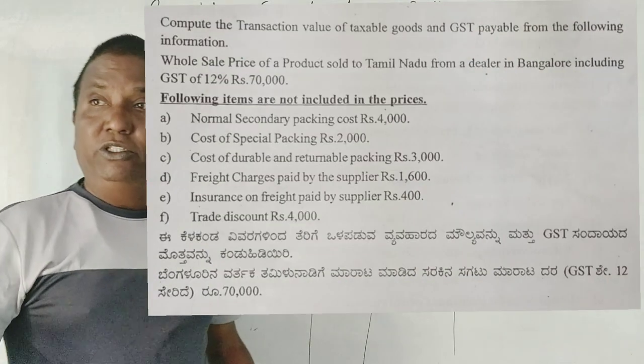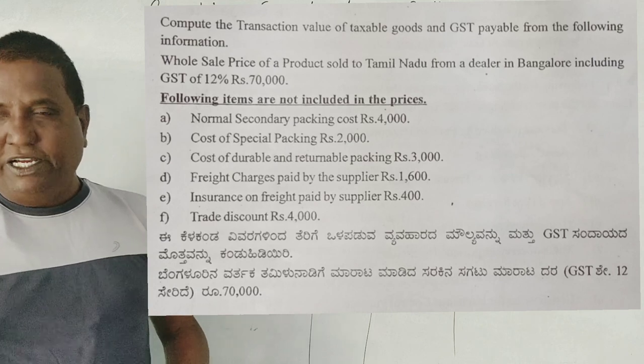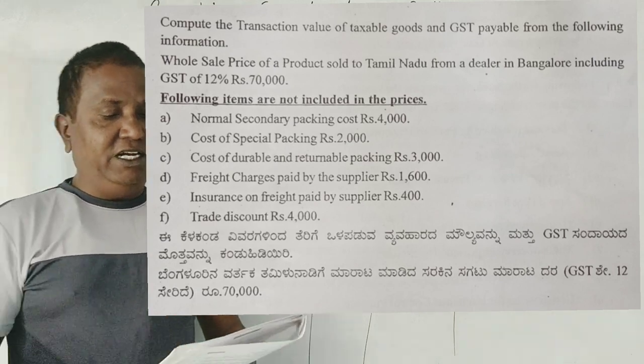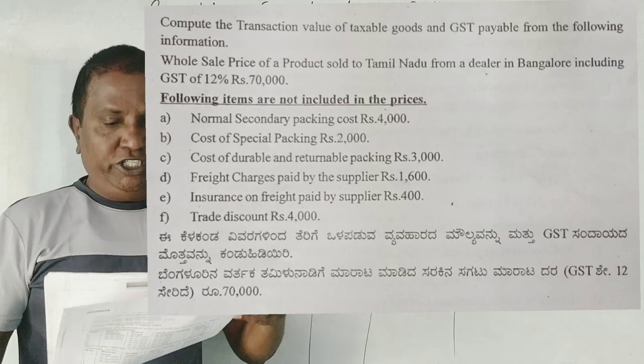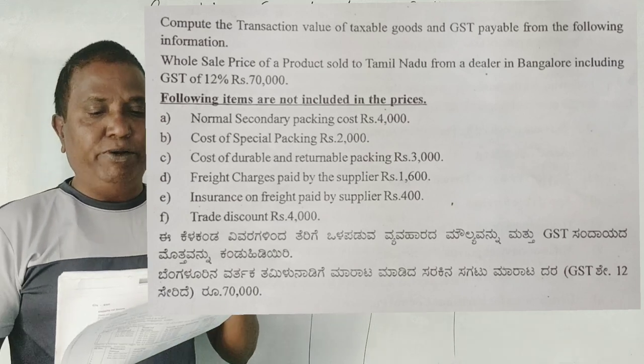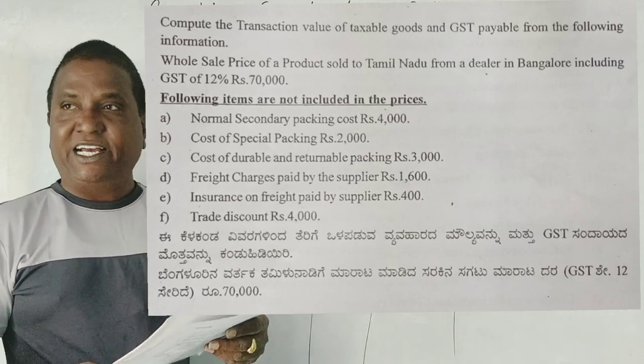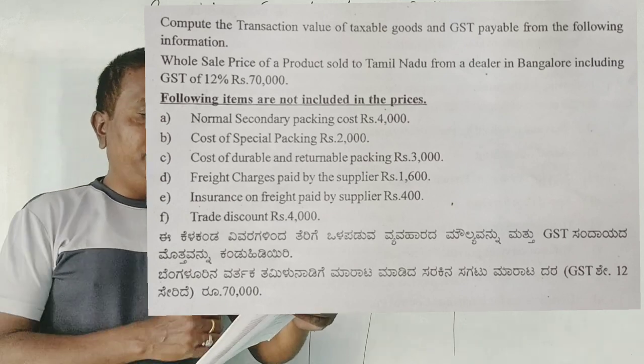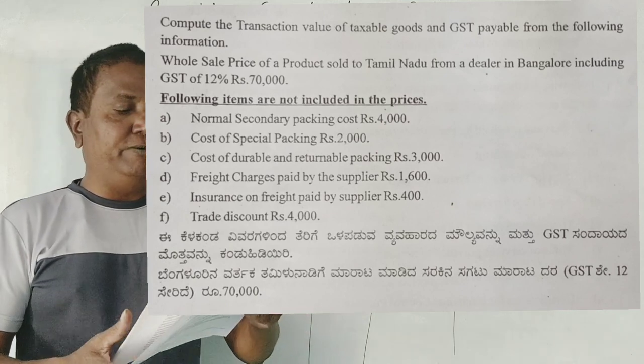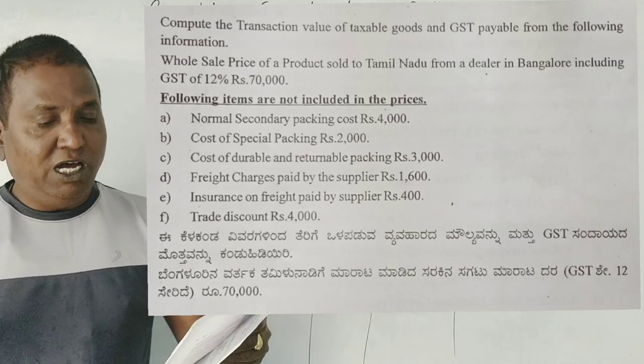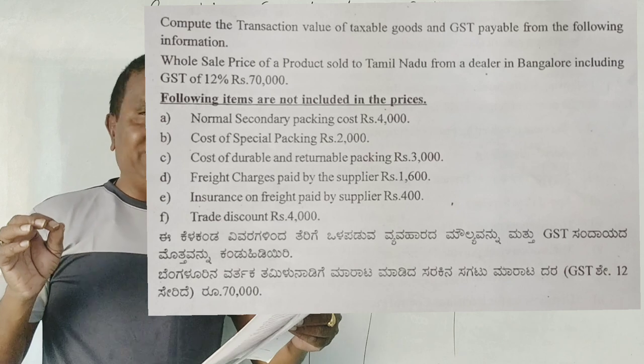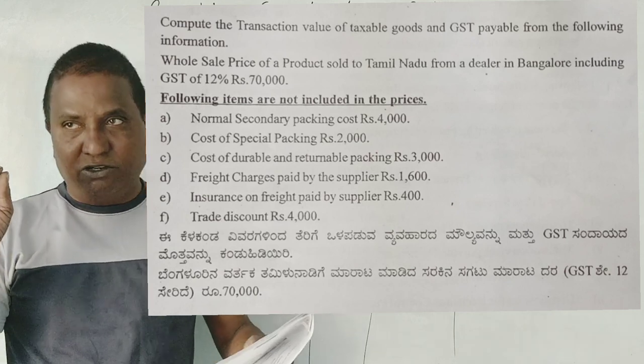This is about GST Chapter 1. Compute the transaction value of taxable goods and GST payable from the following information. Wholesale price of a product sold to Tamil Nadu from a dealer in Bangalore, including GST of 12%, is Rs.70,000.